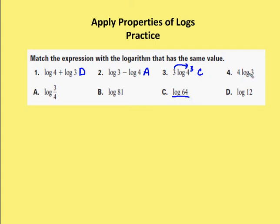And then I have 4 log 3, which gives me 3 to the fourth as I use my power property. 3 to the fourth ends up being 81. So I have log of 81 and this one ends up being B.